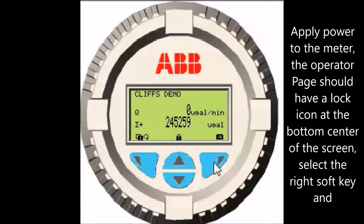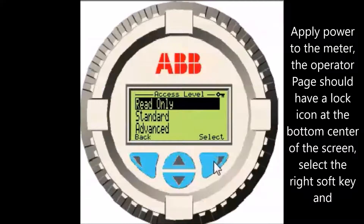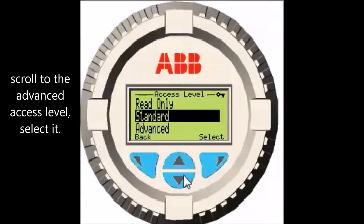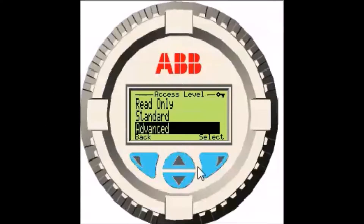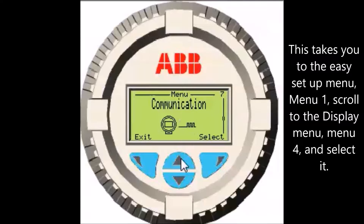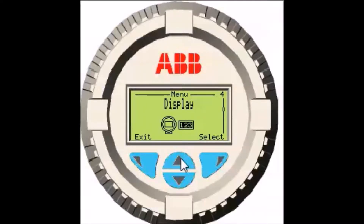Apply power to the meter. The operator page should have a lock icon at the bottom center of the screen. Select the right soft key and scroll to the advanced access level and select it. This takes you to the easy setup menu, menu 1. Scroll to the display menu, menu 4, and select it.